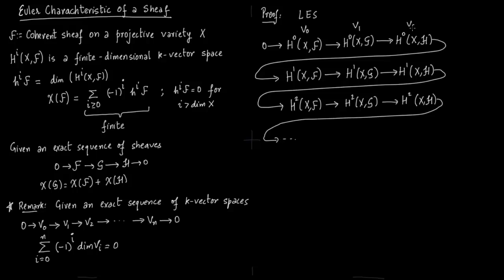So these are just vector spaces V_0, V_1, V_2, V_3, V_4, V_5, V_6, V_7, V_8, and from the remark we have the result: summation i greater or equal to 0, minus 1 raised to the power of i dimension of V_i is 0.